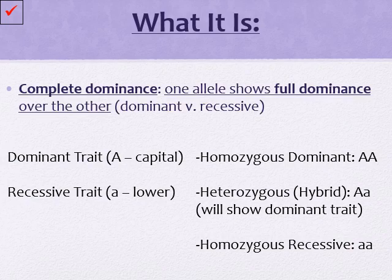So what complete dominance is, is when one allele shows full dominance over the other. So there is a clear dominant and recessive trait, with the dominant masking the recessive. A dominant trait is always marked with a capital letter in the genotype, whereas the recessive is always marked by a lowercase.